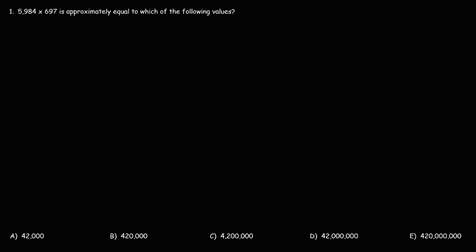In this video, we're going to talk about how to multiply numbers by estimation. So, consider this example. What is 5,984 times 697? What is it approximately equal to? How can you do this without the use of a calculator?